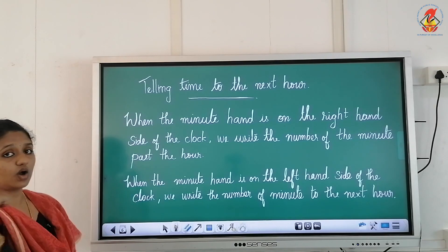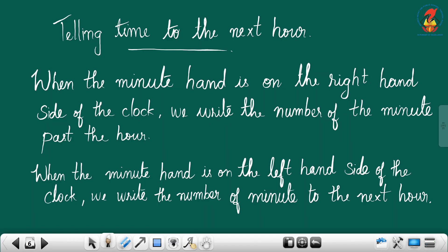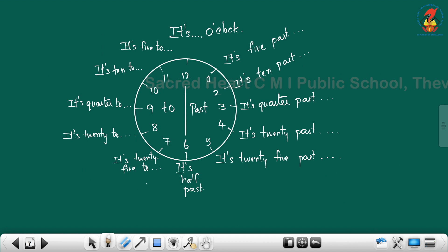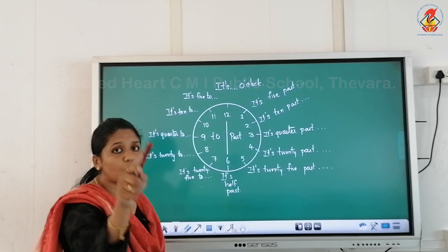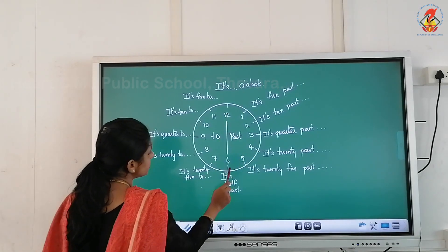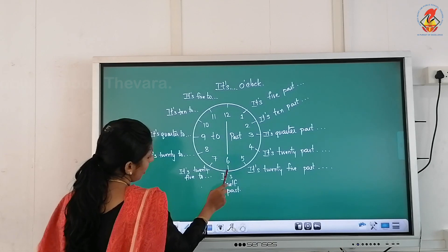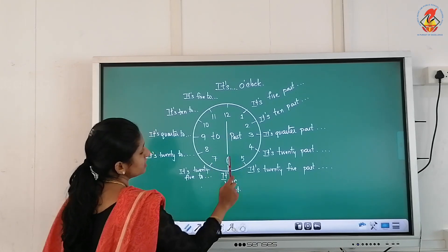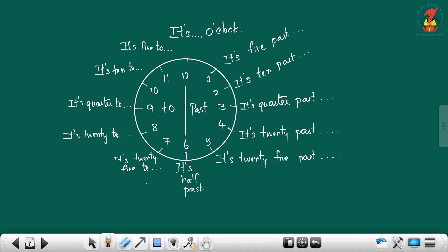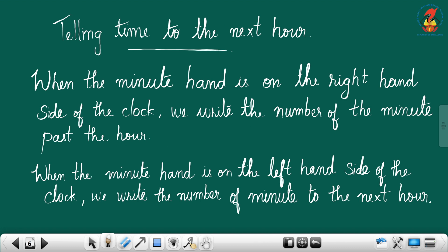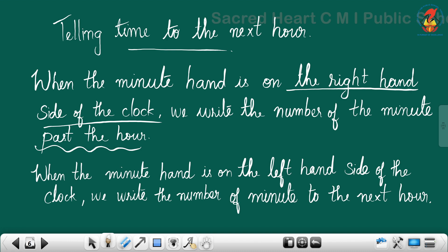Telling time to the next hour: when the minute hand, that is the longer hand, is on the right-hand side of the clock — from twelve to just before six — we write the number of minutes past the hour. When the minute hand is on the right-hand side of the clock, we write the number of minutes past the hour.